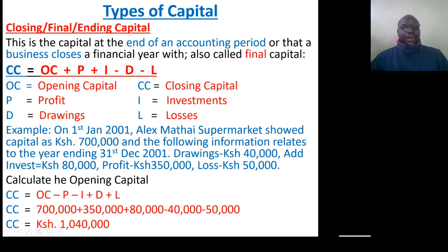An example: on 1st January 2001, Alex Mathai supermarket showed capital as 700,000, with the following information for the year ending 31st December 2001 — drawings 40,000, investments 80,000, profits 350,000, and loss 50,000. Closing capital: 700,000 plus 350,000 profit, plus 80,000 investments, less 40,000 drawings, less 50,000 loss. Closing capital equals 1,040,000.